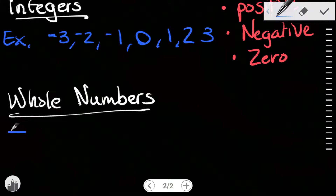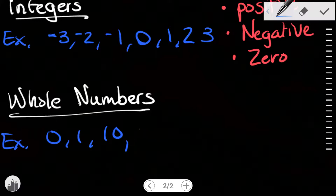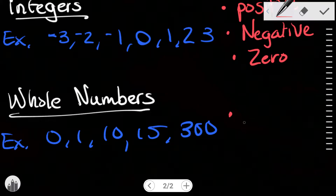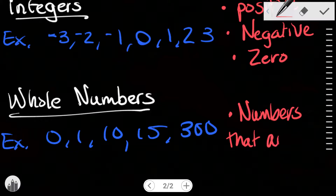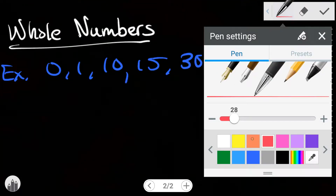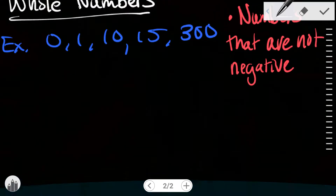Moving on to the next category, we have whole numbers. Whole numbers are numbers that are not negative, so 0, 1, 10, 15, 300 — whole numbers are numbers that are not negative.